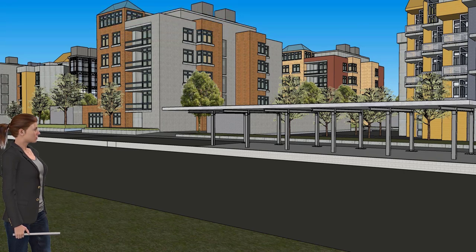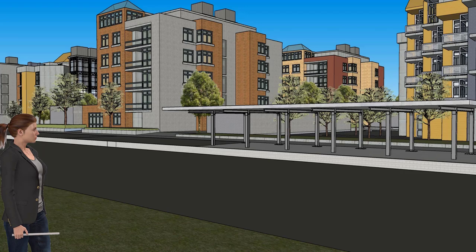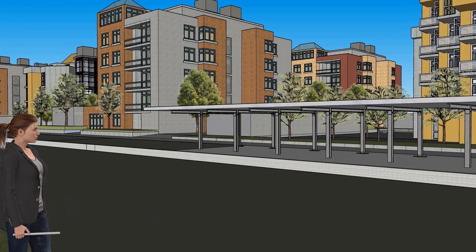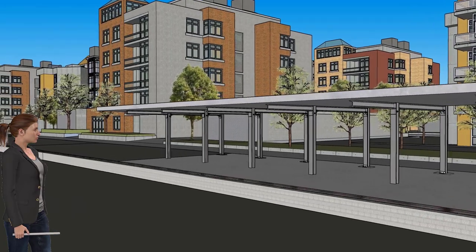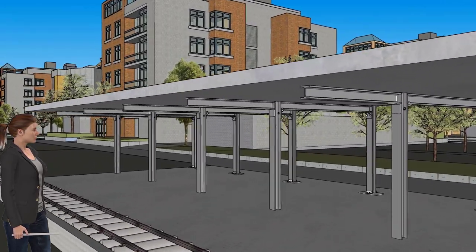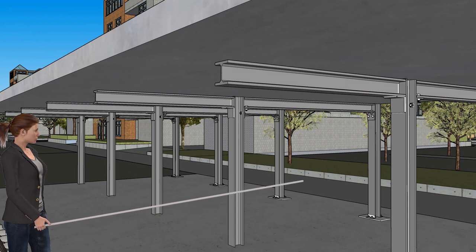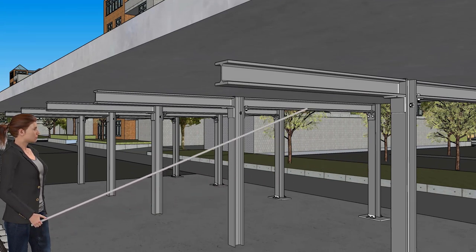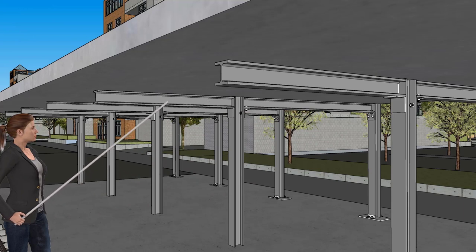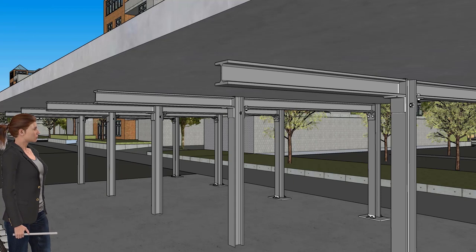The frame is a part of a steel and concrete canopy at a commuter rail station. The canopy is a simple structure consisting of six identical steel frames supporting a concrete slab. Each steel frame consists of two columns, a beam, and an overhang. We wish to draw the shear and moment diagrams for the entire frame when subjected to the dead load of the concrete slab.